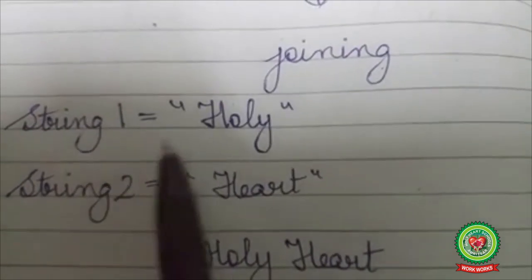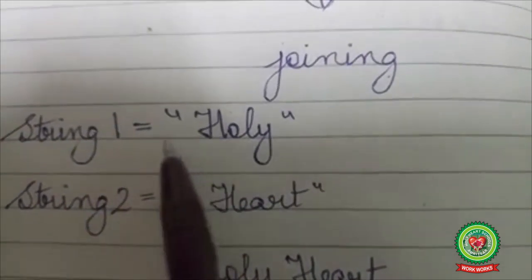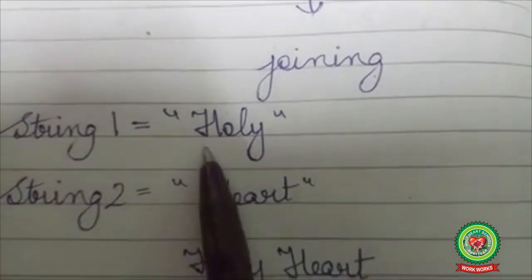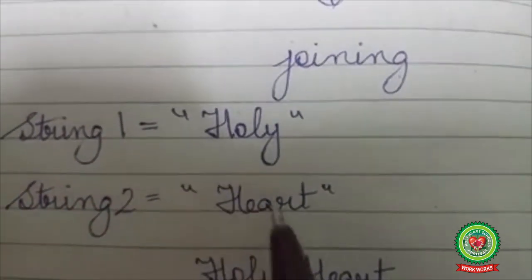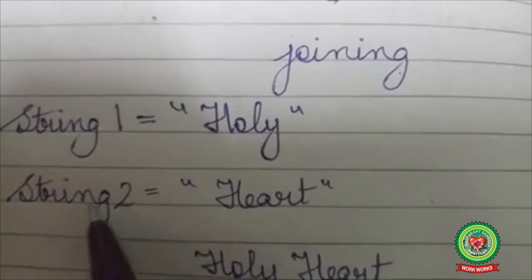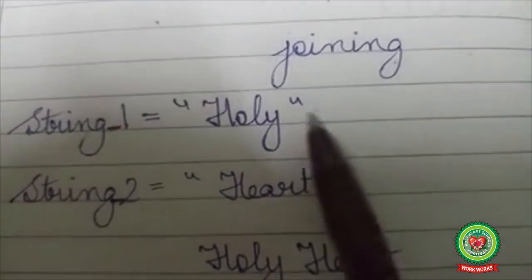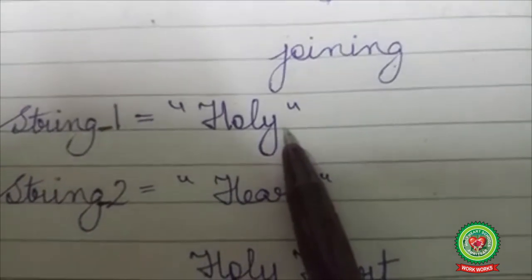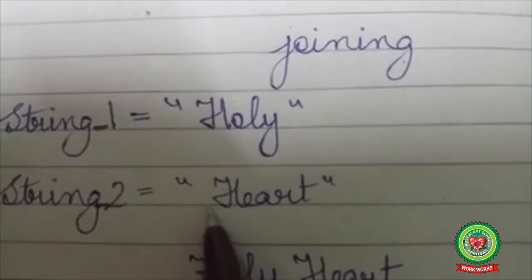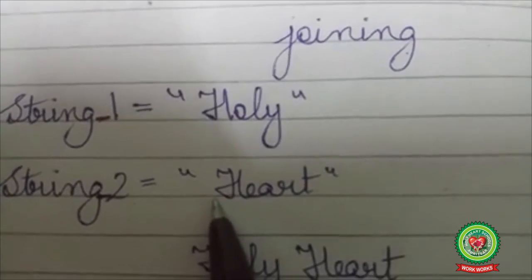Let us consider an example. I have taken the string 'holy' in string object string1 and 'heart' in string object string2. In the string holy, I have left a space of one character, and in heart also I have left a space of one character.